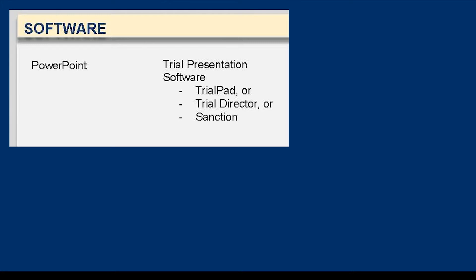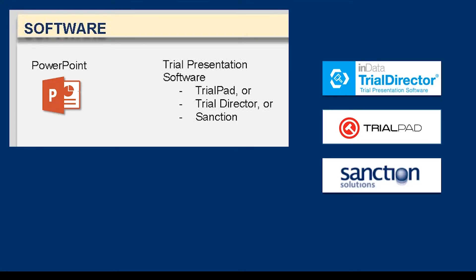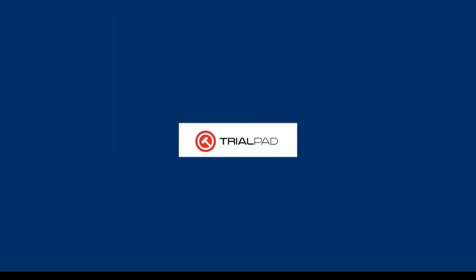At that point, I used animations to show a PowerPoint icon and then three trial presentation software options. I only had 30 minutes, so I used another morph transition to focus on TrialPad, moving the TrialPad logo to the center. Then I switched inputs on the projector to the iPad, which I also had connected in the room. That's kind of how I use the morph transition.